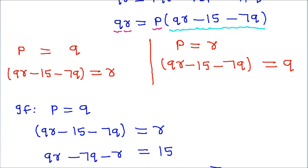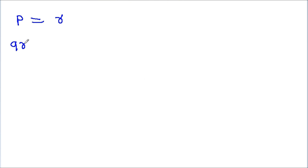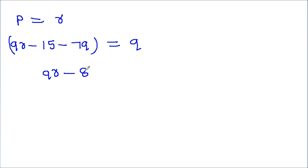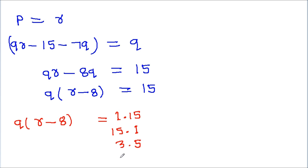Now for the second case, p = r and qr - 15 - 7q = q. So qr - 7q - q = 15, which gives qr - 8q = 15. Taking q common, we get q(r - 8) = 15.